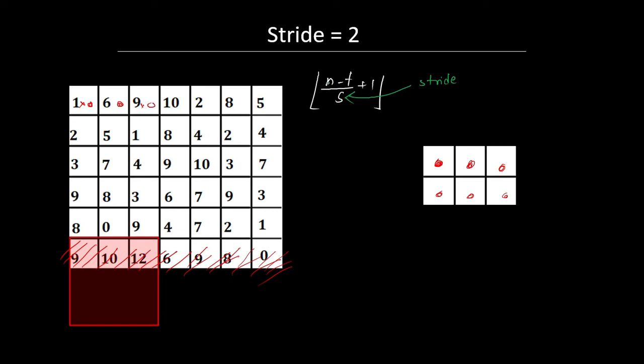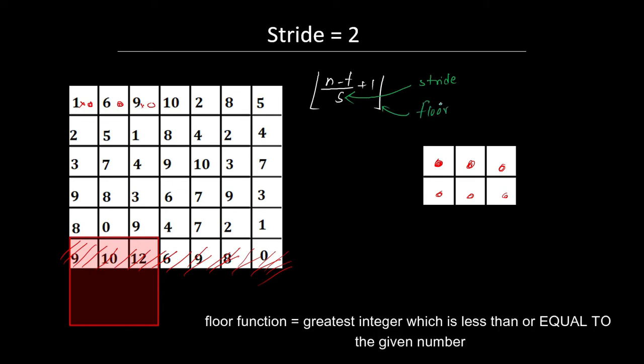Here, n is the input dimension and f is the filter size. The floor function means we take the greatest integer less than the value. For example, the floor of 2.7 is 2.